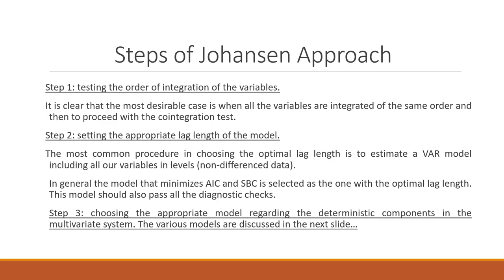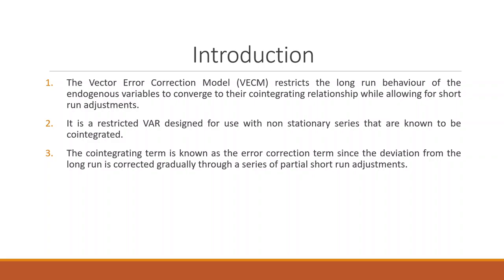Steps of the Johansen approach. The first step is that we have to check that all the variables are integrated of the same order — only then can we proceed for the co-integration test. Second, we will have to determine the appropriate lag length for the model, which can be decided on the basis of an AIC information criterion or a Schwarz-based criterion. Step 3: choosing the appropriate model regarding the deterministic components in the multivariate system. In the vector error correction model, it restricts the long-run behavior of the endogenous variable to converge to that co-integrating relationship. VECM is a restricted form of the VAR, allowing for short-run adjustments.